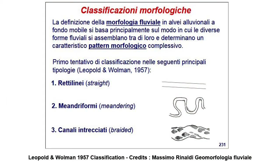A very simple classification comes from Leopold and Wallman. With reference to this diagram, we have three kinds of rivers. The first one is the Straight River. The second one is the Meandering River, and the third one is the Braided River. Straight rivers have a more or less straight path, and generally there are no islands. Meandering rivers have a strongly tortuous path, but like the previous ones, they generally do not have islands. Finally, the Braided River has a path characterized by channels that intertwine with each other, resulting in the formation of islands.